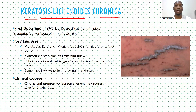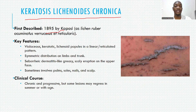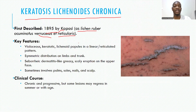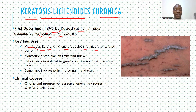The next condition is keratosis lichenoides chronica, first described by Kaposi in 1895. He named it lichen ruber acuminatus verrucosus et reticularis because it has a reticular pattern and can be rough on the surface. The key features include verrucous keratotic or lichenoid papules that form a linear or reticulate pattern on the skin.